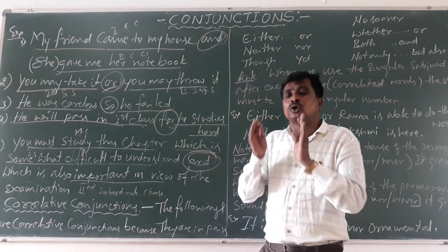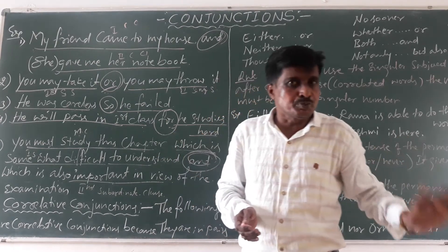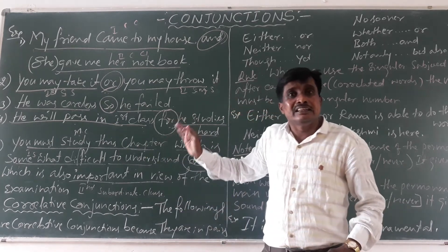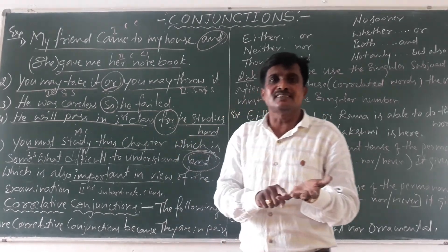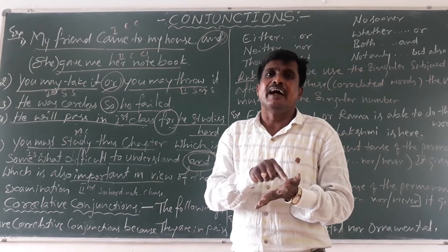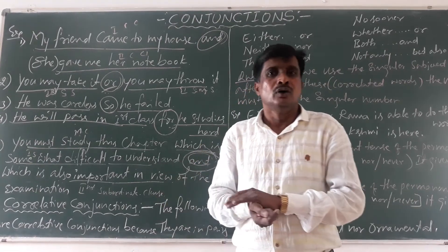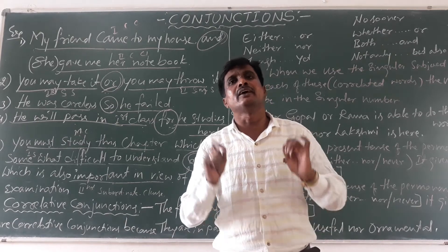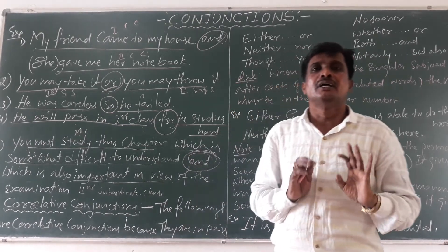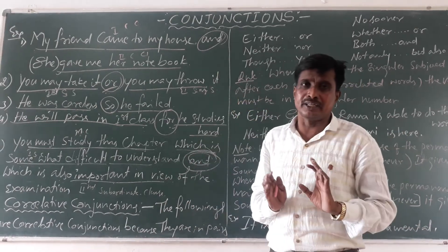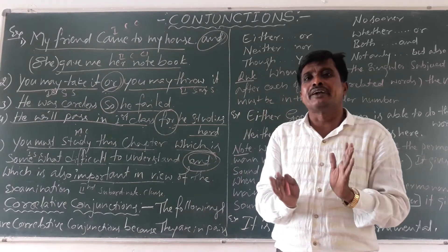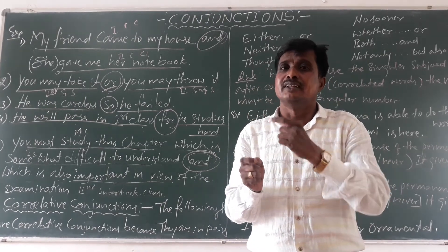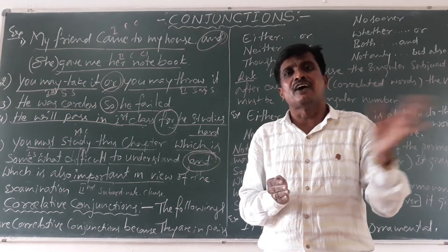Like this, coordinate conjunctions join the same parts of speech or words of the same rank. They join simple sentence with simple sentence, class with class, adjective with adjective, adverb with adverb. 'And', 'but', 'so', 'for', 'or' — these five are the coordinate conjunctions. They join the same parts of speech or sentences of the same rank.